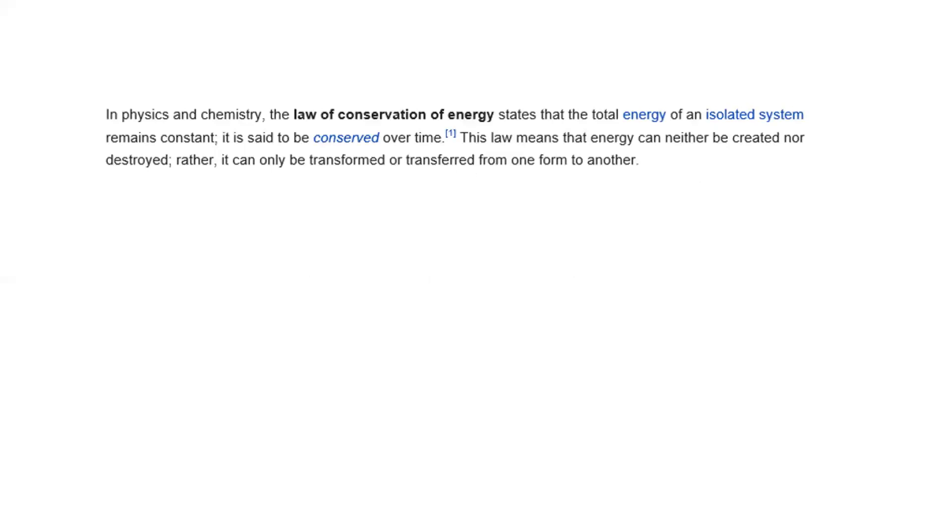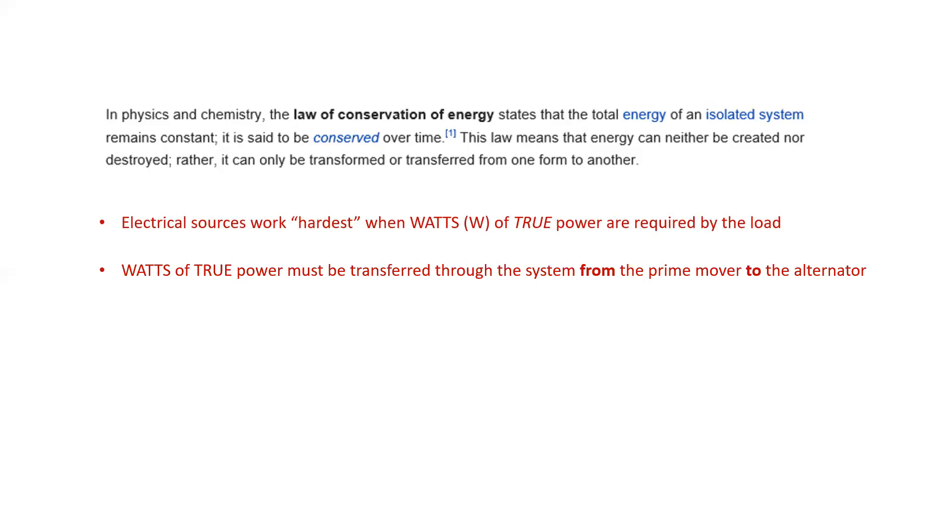In physics and chemistry, the law of conservation of energy states that the total energy of an isolated system remains constant. It is said to be conserved over time. And what this means is that the law that energy can neither be created nor destroyed. Rather, it's only transformed or transferred from one form to another. How this translates to our discussion is that electrical sources work hardest when watts of true power are required by the load. Watts of true power must be transferred through the system from the prime mover to the alternator.